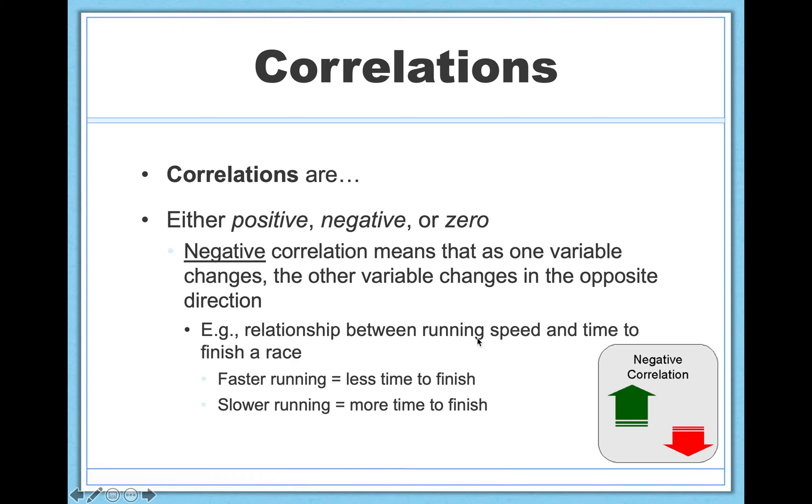The relationship between how fast you can run and the time it takes for you to finish a race. Think about it. The faster you run, the less time it'll take for you to finish the race. The slower you run, chances are it'll take you more time to finish the race. Now notice these two variables are working against each other. They're moving in opposite directions, making it a negative correlation.